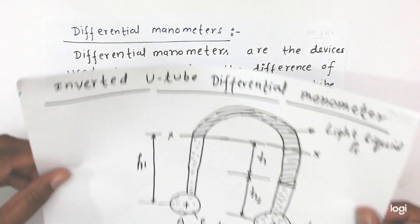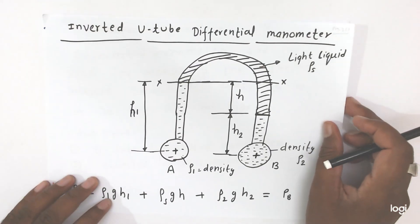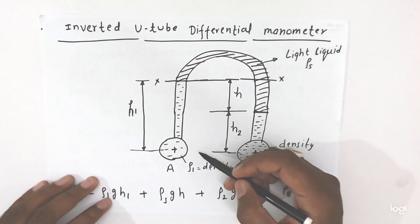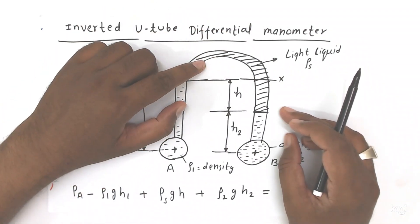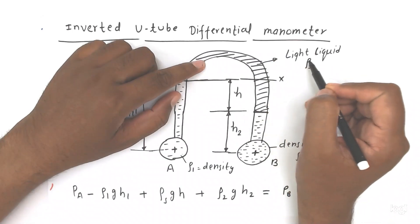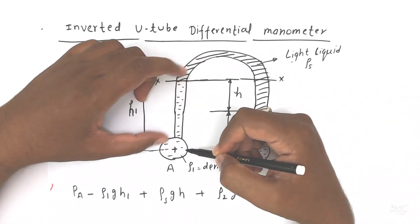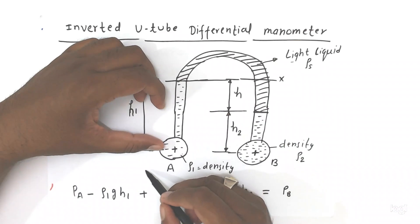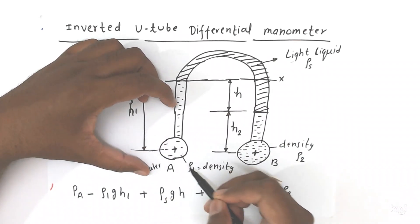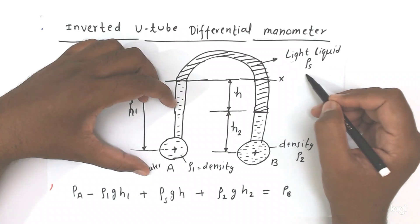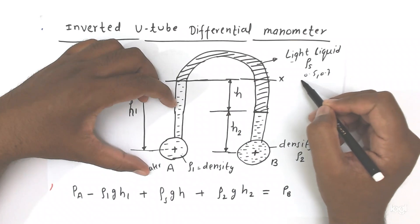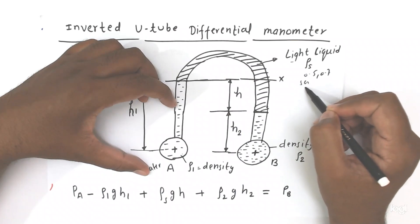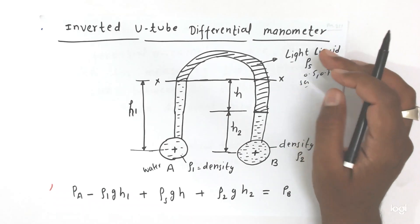This is the inverted U-tube manometer. Here, this part is on the top side, and we are filling here a light liquid compared to the pipe fluid. Suppose this is water — so we will put a light liquid here, meaning a liquid with specific gravity of 0.5 or 0.7.